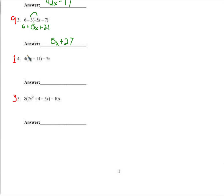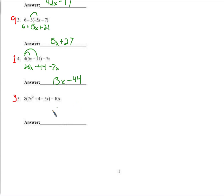Next we're distributing a four. Four times 5x is 20x. Four times negative 11 is negative 44. 20x minus 7x is 13x, so 13x minus 44.